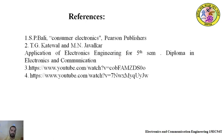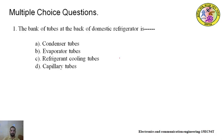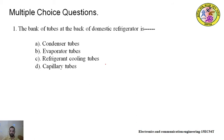These are the references used to make the presentations. Dear students, now we will see some multiple choice questions regarding refrigeration. First question: the bank of tubes at the back of a domestic refrigerator is — options are: condenser tubes, evaporator tubes, refrigerant cooling tubes, capillary tubes. Answer: condenser tubes.